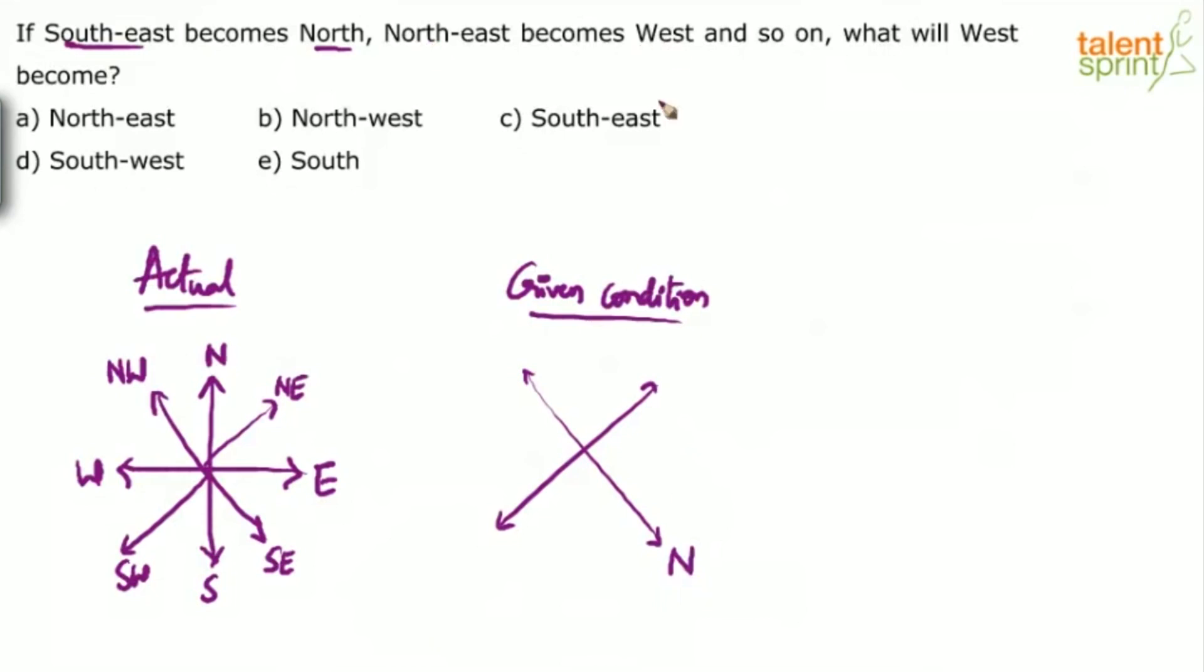And northeast becomes west. Northeast becomes west. What is northeast? North is this. The one which comes between north and east. So northeast becomes west. This becomes west. And so on. So what will west become?